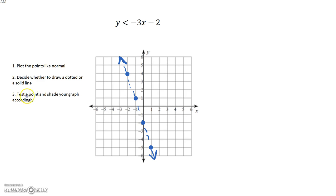Our last step is to test a point and shade our graph accordingly. Again, I like to test the point 0, 0 to see if that comes out as a solution. So I'm going to plug in the point 0, 0 into my inequality. So it becomes 0 is less than negative 3 times 0 minus 2. 0 is less than negative 2. Is that a true statement? Is 0 less than negative 2? No.